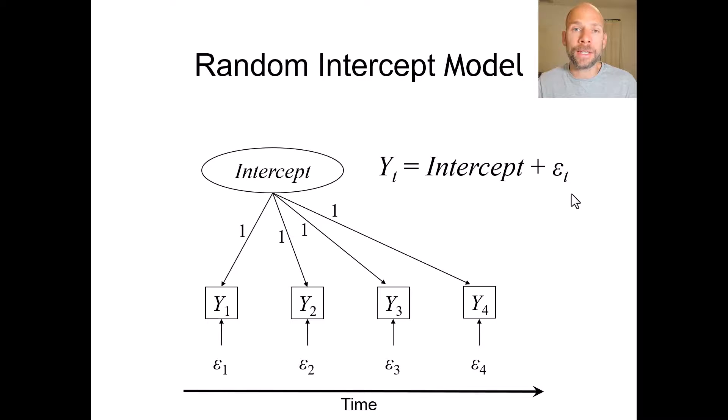For example, or latent change because the true scores were stable across time and fluctuations in my observed scores is solely explained by random measurement error. And the conclusion would be that this construct is trait-like and stable for at least the period of time that is considered in the study.